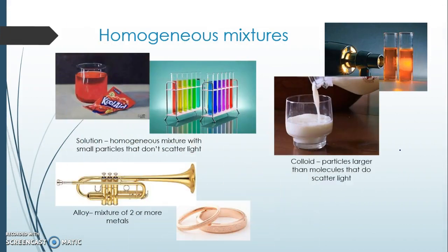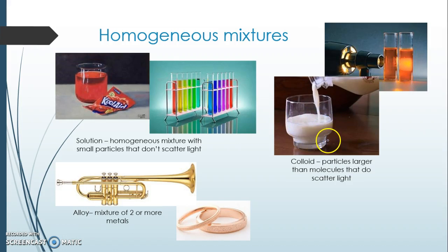Homogeneous mixtures include solutions, colloids, and alloys. A solution has particles too small to scatter light; a colloid has larger particles that do scatter light. Properties of a homogeneous mixture: it's the same throughout. Kool-Aid looks the same in every sip; colored solutions in test tubes are uniform throughout; milk looks all the same.